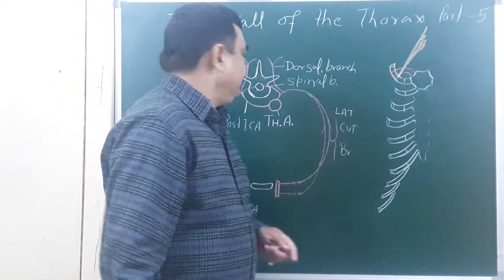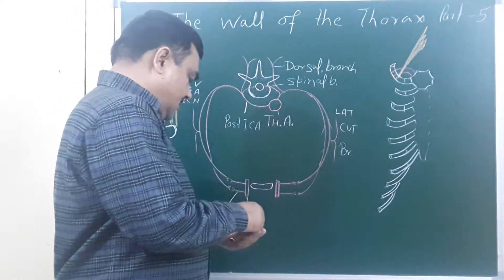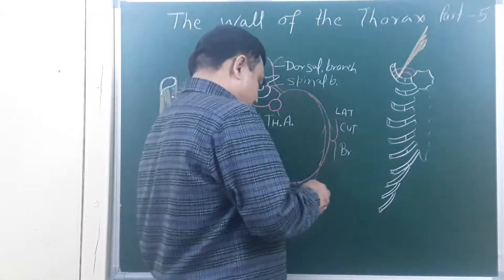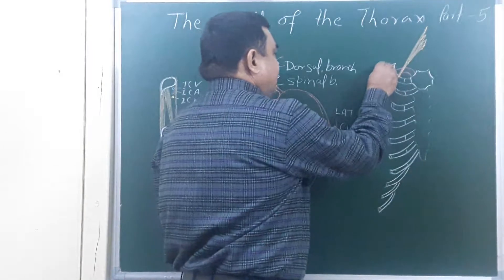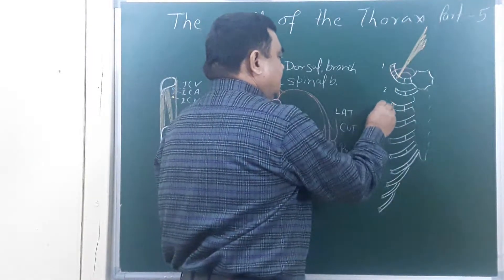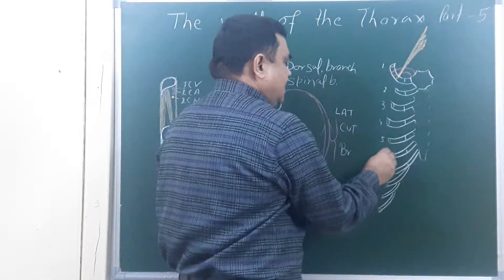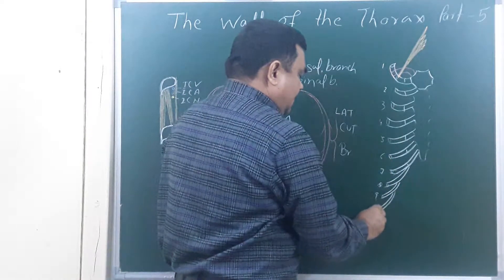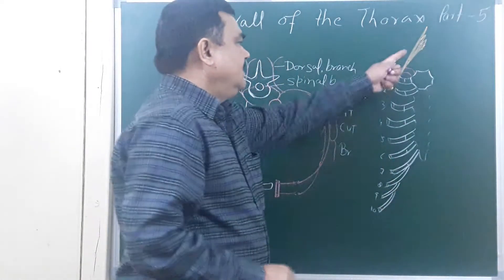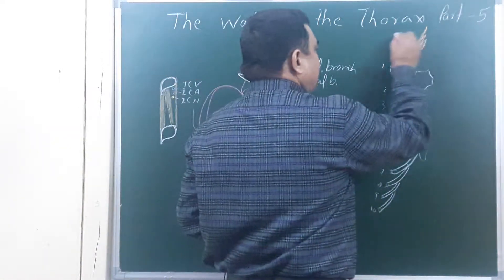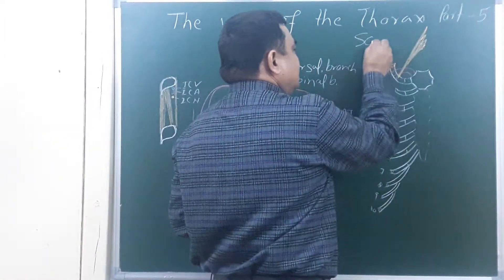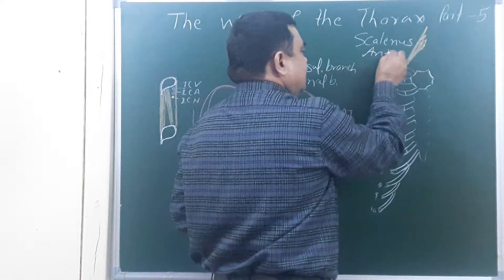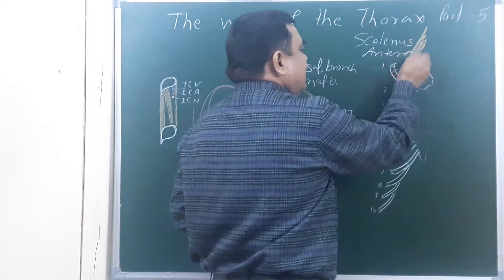In this diagram you can see the first rib, then the second, third, fourth, fifth, sixth, seventh, eighth, ninth, and tenth rib. This is the scalenius anterior muscle.